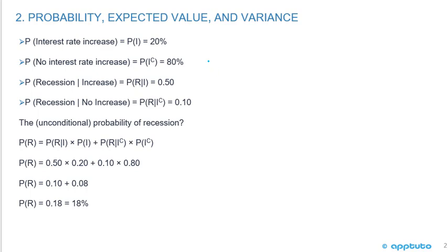So in this case, there's a probability of a rate increase of 20%. So if we start here, we can say that there's a probability of a rate increase of 20%, which means the probability of no rate increase would be 80% because that has to equal 100%.